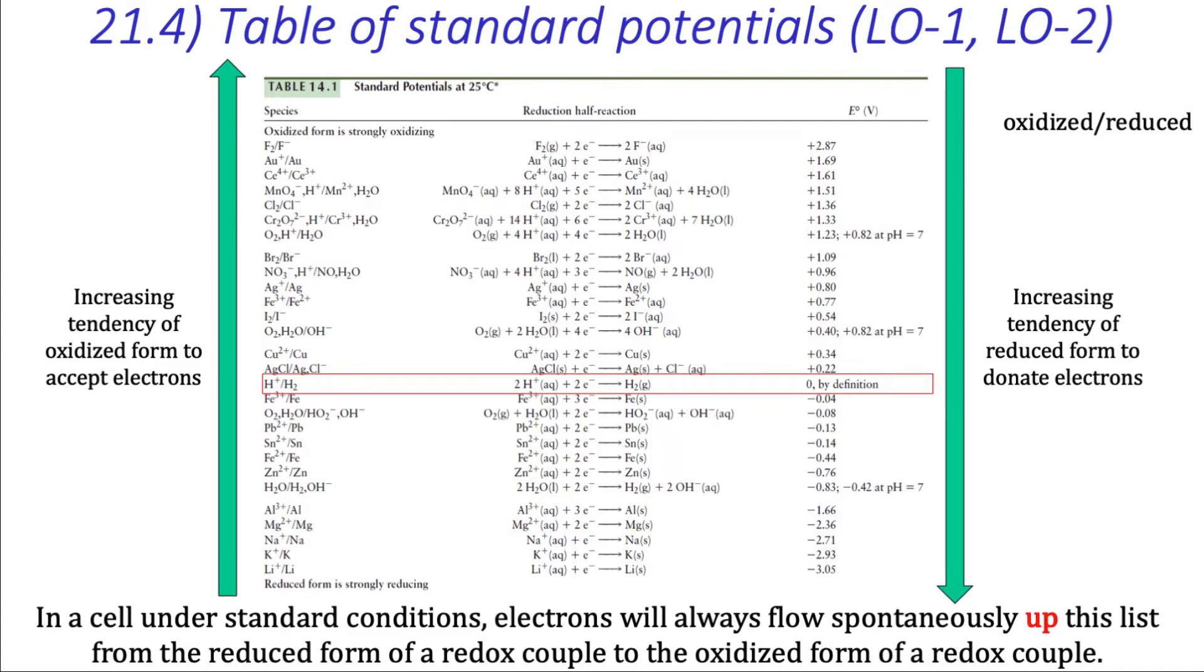And as we go down the list, the reduced form of each redox pair has a stronger and stronger tendency to lose electrons and thus become oxidized.